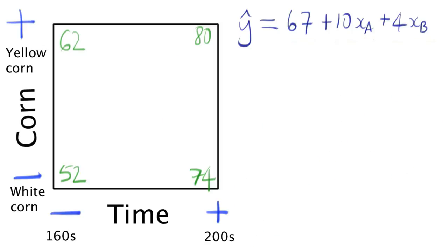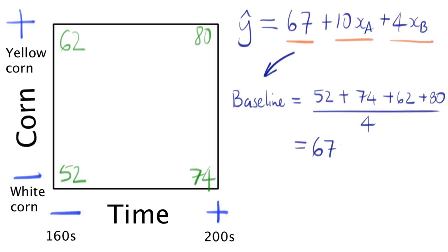Now where did these values come from? The baseline value of 67 is the easiest one to calculate. It's simply the average of the four values here on the cube: 52 plus 74 plus 62 plus 80, and then divide that by 4, which is equal to 67.